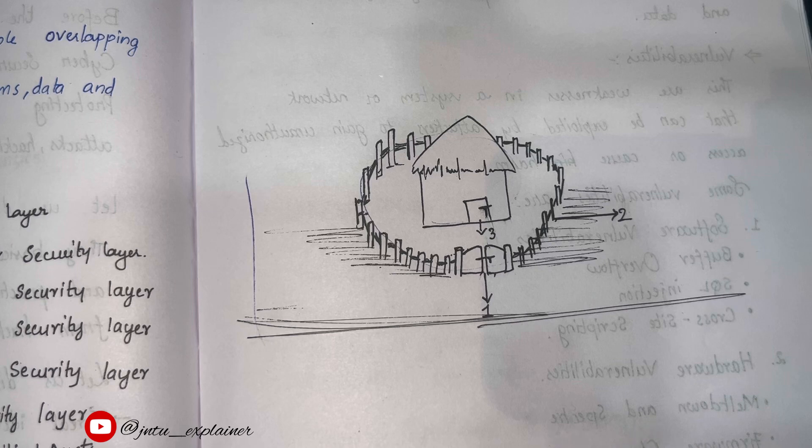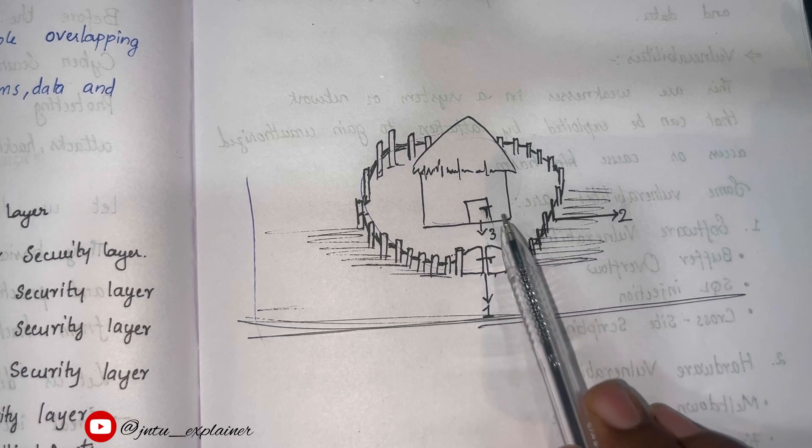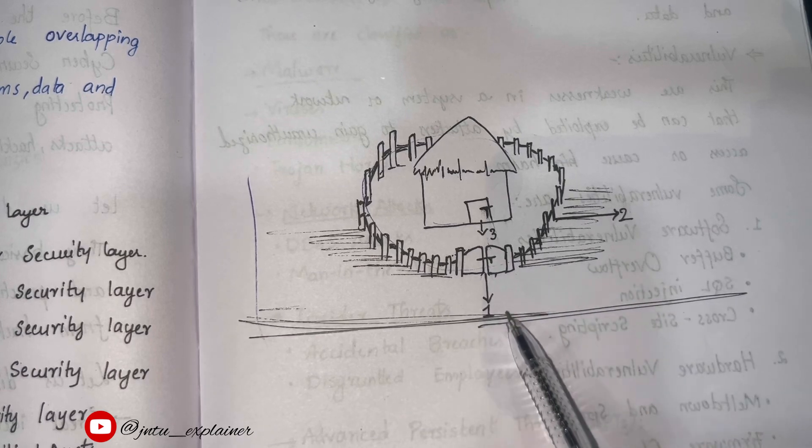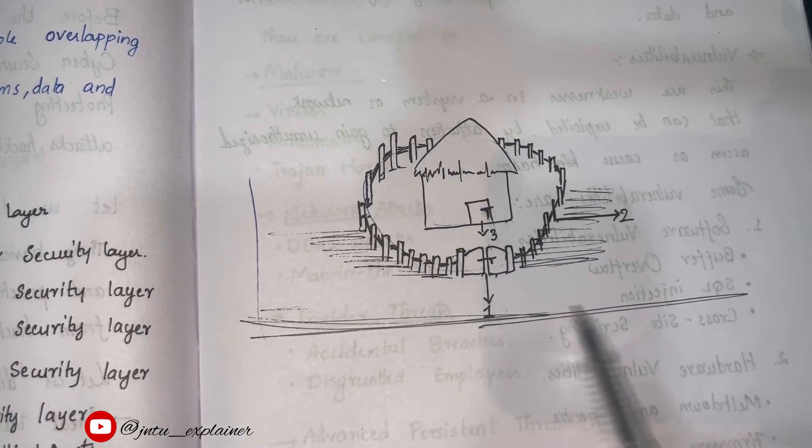First, how the layers of security are layered? In the same way, this is a house which has a road or some type of boundary wall. This is the first layer of protection to the house.